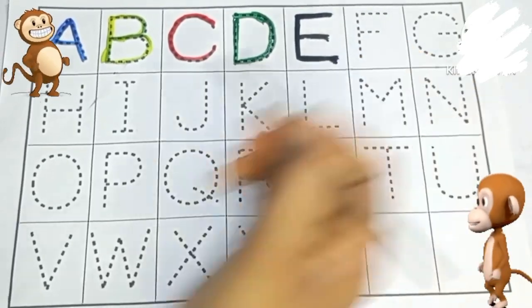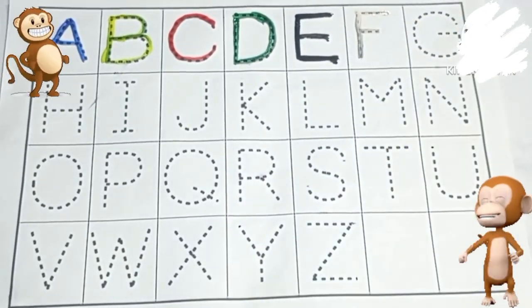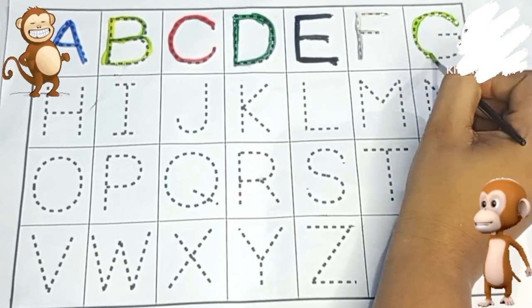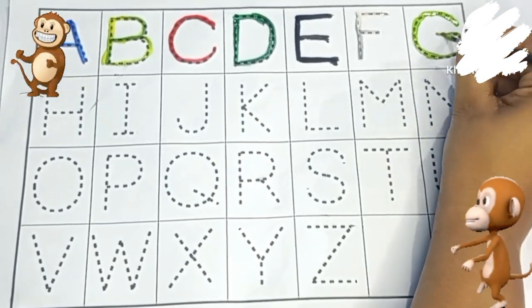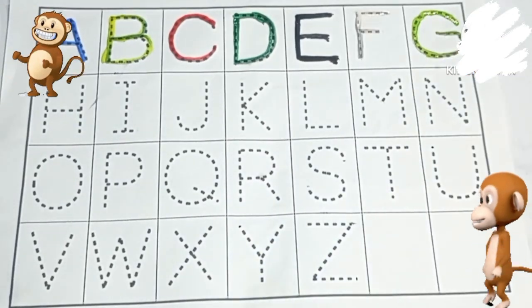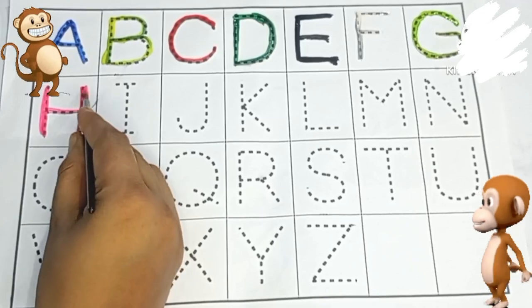E. E for elephant. F. F for fish. G. G for grip. H. H for hen.